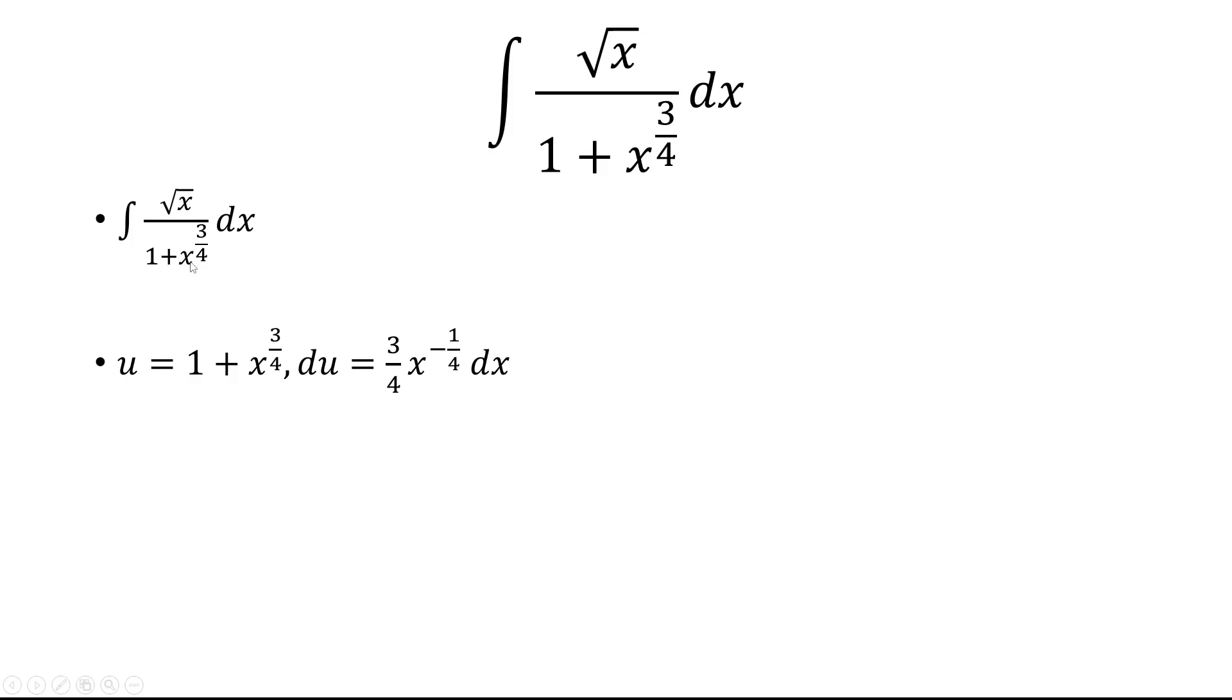Now the denominator is just u, but the question is, what is the numerator? I want to get square root of x in the numerator, but here I have x to the 3/4 and x to the negative 1/4.